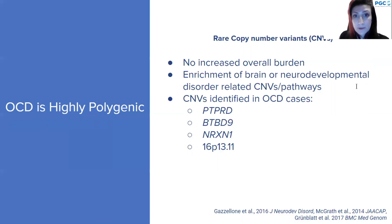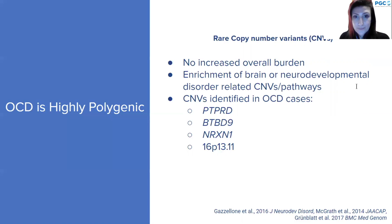Some of the CNVs identified in OCD cases include PTPRD, which again is recurring in findings, as well as BTBD9, orexin-1, and 16p13.11. CNV studies to date have been relatively small, and there is an initiative within the PGC-OCD group to conduct a larger scale CNV study of OCD.